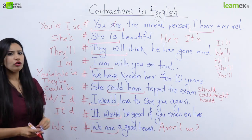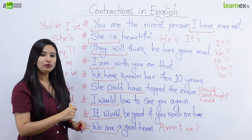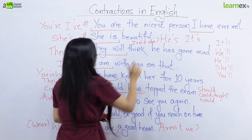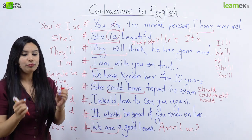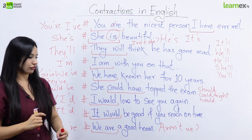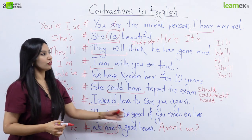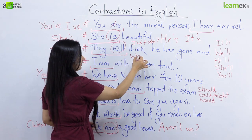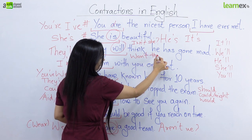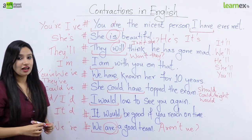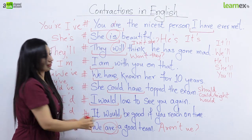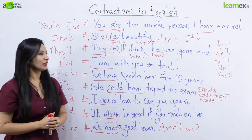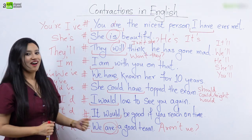Aur yahan par hum thodi bahut aur negative contractions bana sakte hain. Jaise: She is beautiful — isn't she? Yahan par aapko dekhna hai ki humari helping verb kya hai. Humari helping verb decide karti hai ki humari negative contraction kya banegi. Yahan par 'are' hai isliye aren't we, yahan par 'is' hai isliye isn't she, yahan par 'will' hai isliye won't they. Toh negative contraction banane ke liye aap notice karenge ki aapki helping verb kya hai, aapka subject kya hai, aur beech mein aap 'not' lagayenge, apostrophe laga ke bolenge: isn't she, won't they, aren't we.